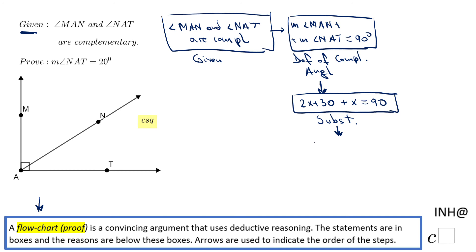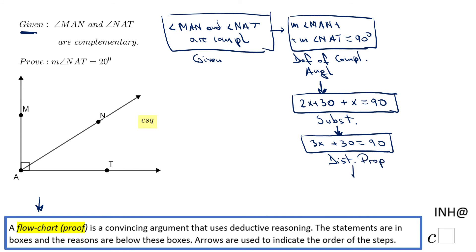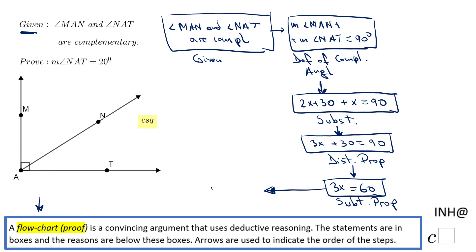That is the next box, and the property is the distributive property. My next step is to subtract 30 from both sides and get 3x equals 60 — this is the subtraction property. Then, going in a new direction since space is limited, I divide by 3 and get x equals 20, which is the division property.